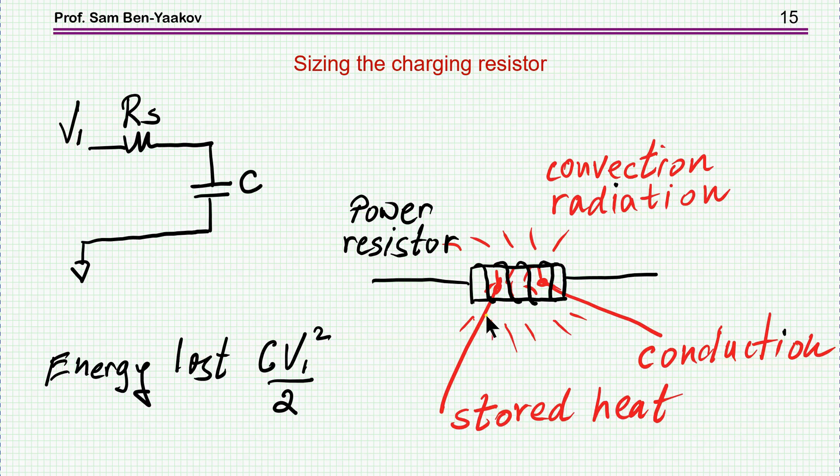So what happens in this case is that the energy that you pump in by this current that dissipates here doesn't have a chance to move away by convection or radiation. Most of it is trapped here within the unit itself, and it's heating it up. So you have a stored energy, and the amount of energy in our case is the CV² over 2.